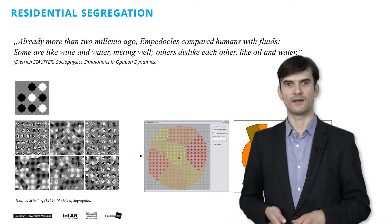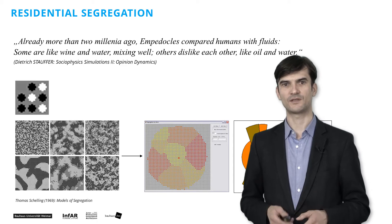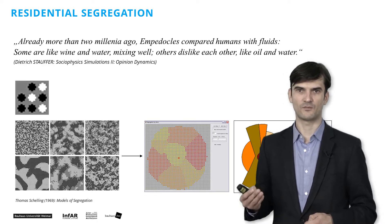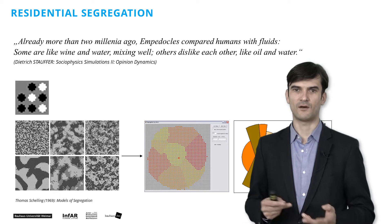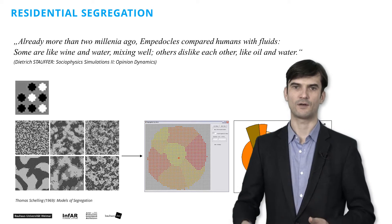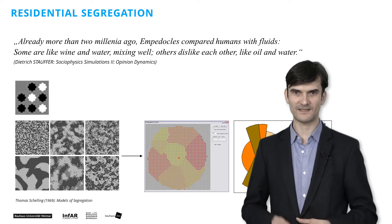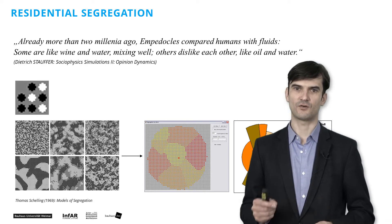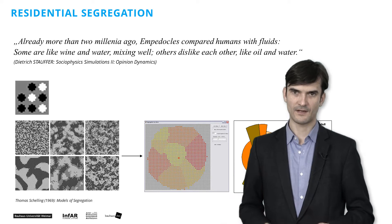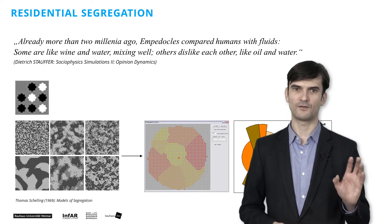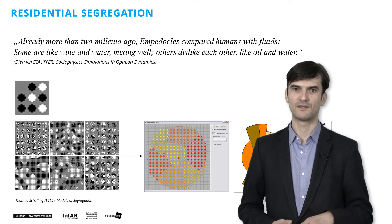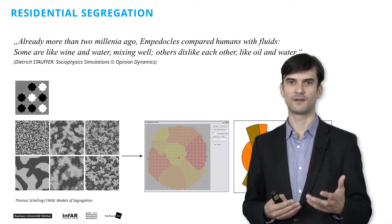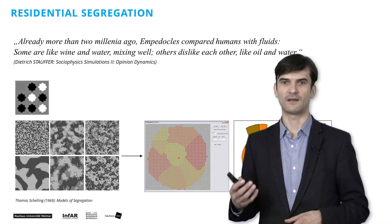In the following we look at the application of cellular automata and agent-based models for the simulation of residential segregation processes, which matters in urban simulations and urban planning to explain how certain groups are located in a city. Residential segregation is the pattern that results from individual decisions regarding the choice of where they want to live. There is a nice citation that illustrates it: already more than two millennia ago Empedocles compared humans with fluids — some are like water and wine mixing well, others dislike each other like oil and water.